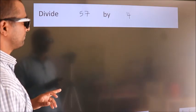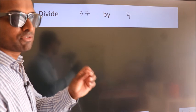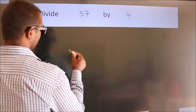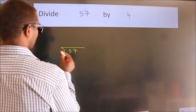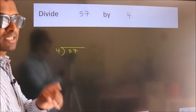Divide 57 by 4. To do this division we should frame it in this way. 57 here, 4 here. This is your step 1.